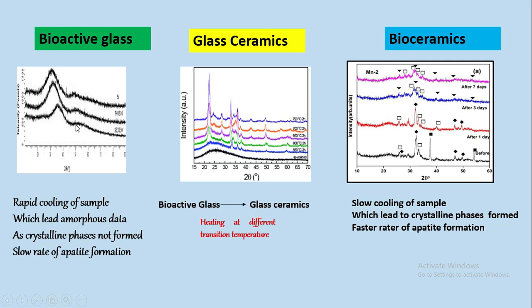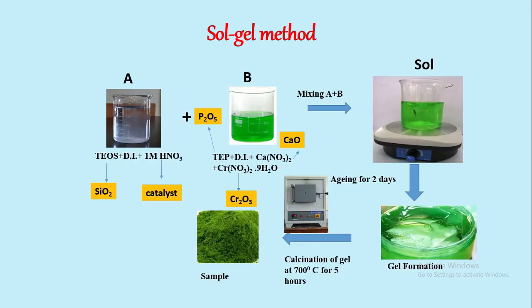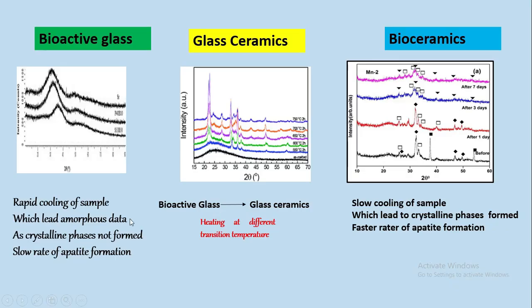Bioactive glass formation takes place when we rapidly cool the sample, which leads to amorphous phase, not able to form crystalline phases. In glass ceramics, first the bioactive glass is formed, and further heating at different transition temperatures leads to formation of glass ceramics with crystalline phases. Whereas in bioceramics, there is slow cooling of sample which leads to crystalline phase formation.